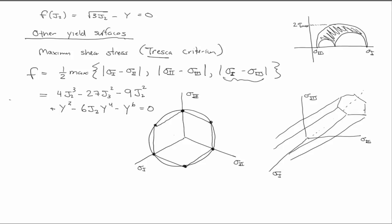So you do notice that J3 appears here, and what's J3? If you remember, J3 is the determinant of sigma, which is also the product of the eigenvalues of the principal stresses.